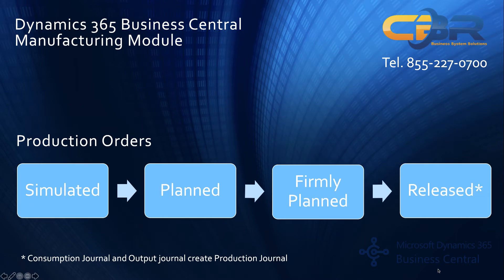After the setup of the item, production, and routing steps, which we'll go through in the live system in just a moment, you then have the ability to create actual production orders. Production orders can go through various stages, starting with a simulated production order, which can then be turned into a planned, firmly planned, and finally a released production order. Importantly, you do not have to go through every stage — you can go directly to a released production order if doing it manually. If using the system to generate a production order from demand planning or sales forecast information, you can start with a firmly planned and then release it.